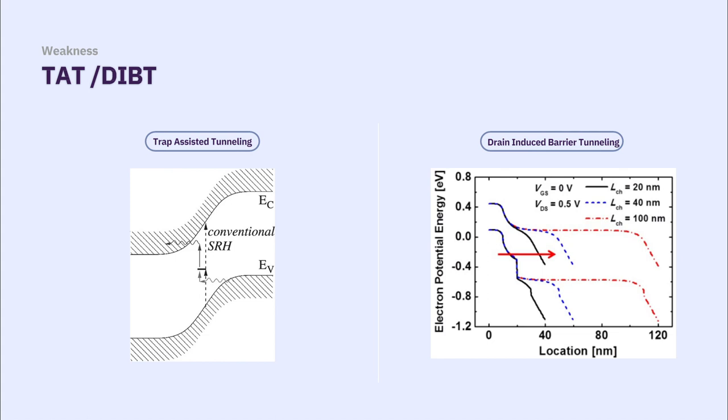Second is drain-induced barrier tunneling. This effect is similar to DIBL, so I'll explain briefly. When we scale down the transistor for putting many transistors in one chip, then channel length gets shorter, then electrons can pass through easier at low gate voltage, then off current gets larger. This is DIBL effect.